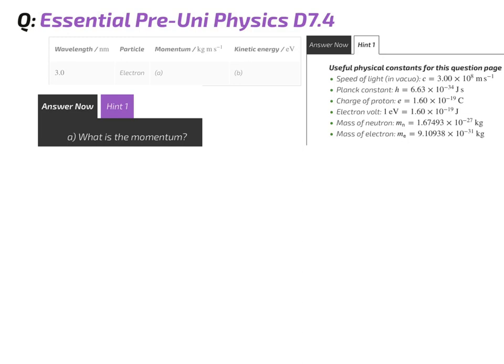Normally, to work out momentum, we would use the equation P equals mv, but we can't use that in this case because we don't know the velocity of the electron. We only know its mass and its wavelength. So instead, we're going to be using the de Broglie equation, which is this one here, momentum equals Planck's constant over the wavelength.